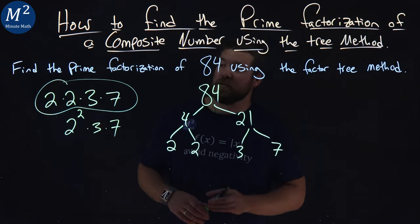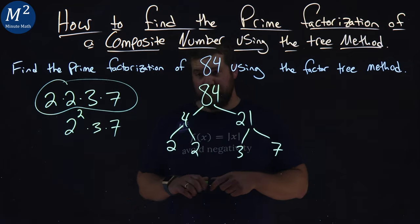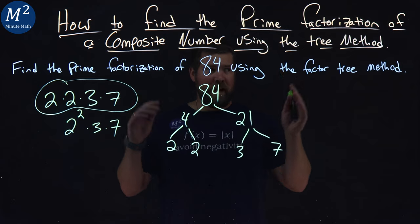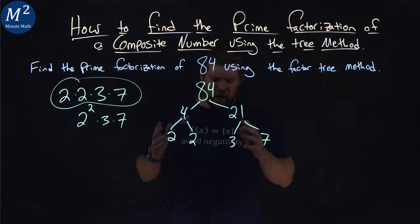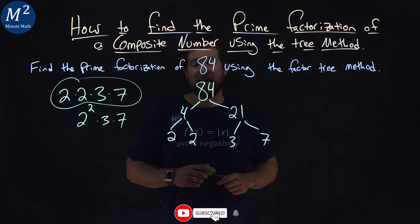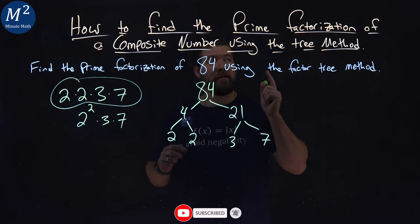But there we have it. Our prime factorization is 2 times 2 times 3 times 7 of 84, and we use the factor tree method to find it. Hope you learned something here on how to find the prime factorization of a composite number using the tree method.